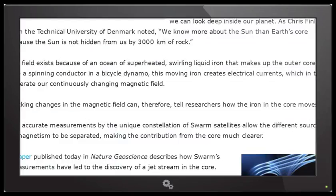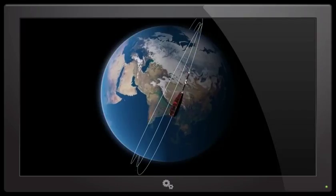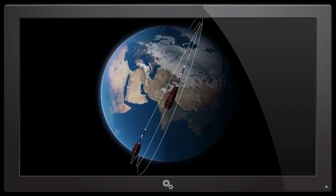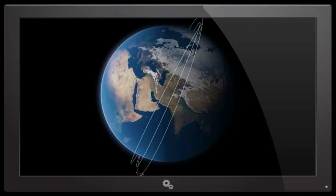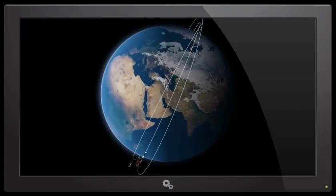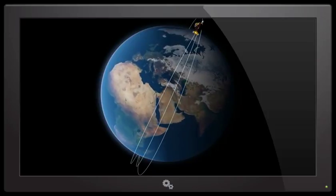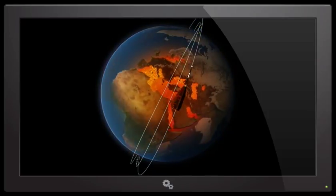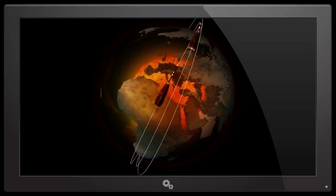The field exists because of an ocean of superheated swirling liquid iron that makes up the outer core, like a spinning conductor in a bicycle dynamo. This moving iron creates electrical currents, which in turn generate our continuously changing magnetic field. Yeah, that thing is changing at rapid scary levels, but whatever.